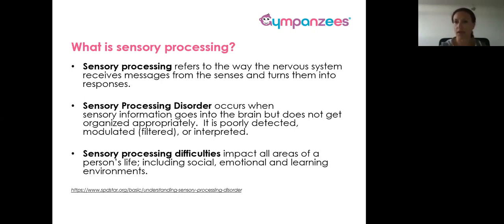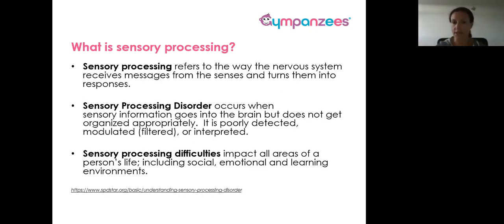There are many times within perhaps your own children where some of that information is getting a little bit mixed up, and you can almost refer to it like a traffic jam in the brain. The information is coming in, but sometimes the way that it is interpreted, filtered, or responded to is different — whether they might over-respond or under-respond to some of the different input coming in. We really need to try and address some of these difficulties when it starts to impact their daily functioning: their social, emotional, learning environments, and participation in daily living activities can all be impacted by difficulties with sensory processing.